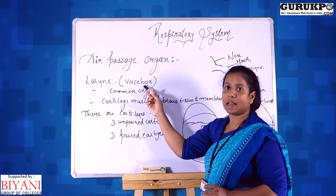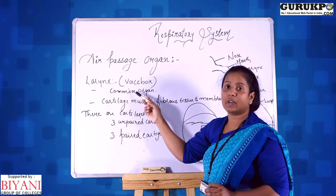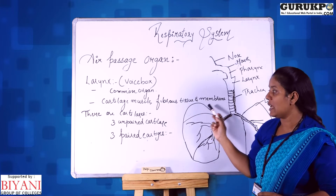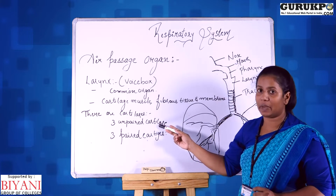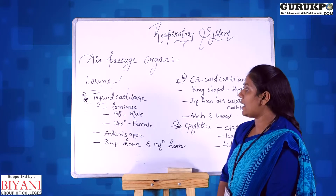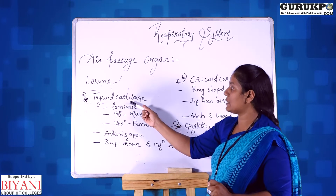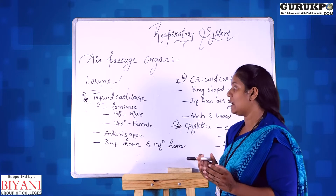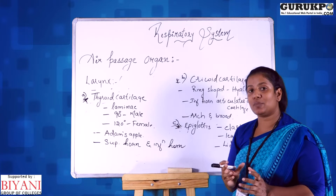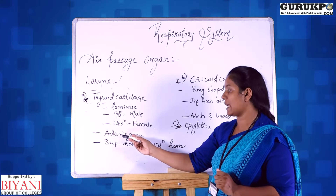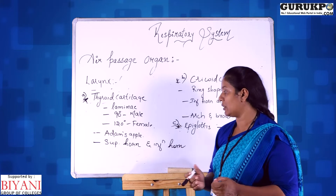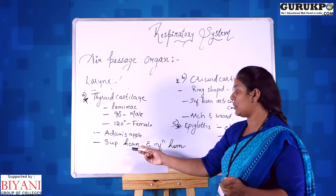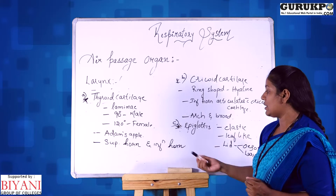The third part is the larynx, also known as the voice box. It is a common organ for both respiration and food passage, and is made up of cartilage, muscles, fibrous tissues, and membranes. There are three unpaired cartilages and three paired cartilages which make up the complete larynx. The first cartilage is the thyroid cartilage — it is the largest cartilage, and anteriorly it forms laminae. The laminae make a 90-degree angle in males and 120 degrees in females, so the laryngeal prominence protrudes in males, which is known as Adam's apple and makes the male voice slightly deeper. The posterior part of the thyroid cartilage projects superiorly, forming the superior horn, and the inferior projection is known as the inferior horn.